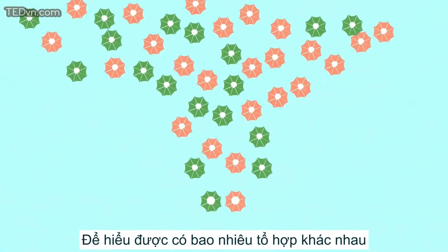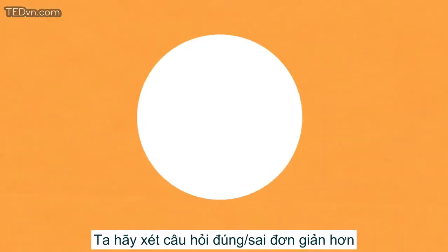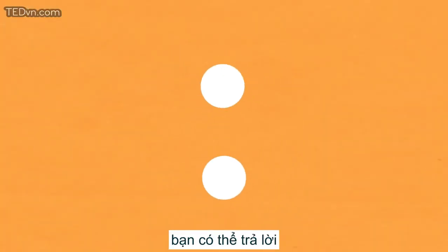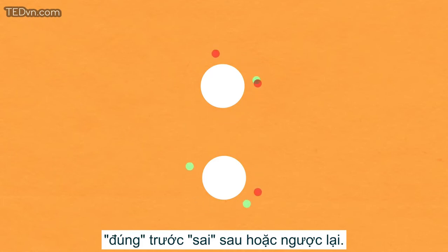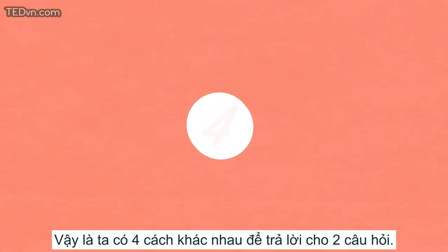To understand how many different combinations, let's think about a much smaller true-false quiz with only two questions. You could answer true-true, or false-false, or one of each — first false then true, or first true then false. So that's four different ways to write the answers for a two-question quiz.